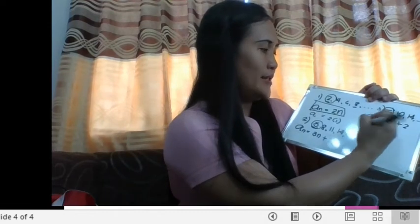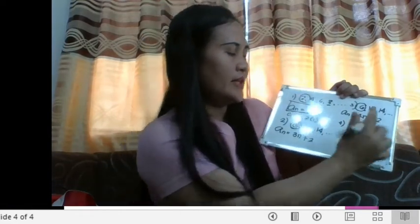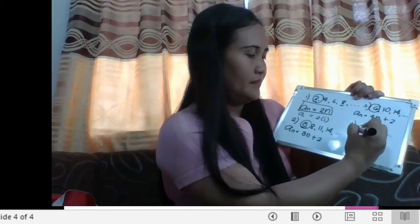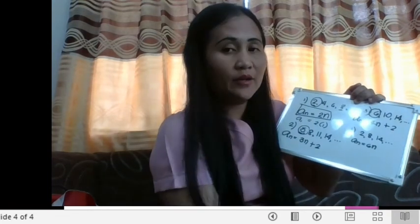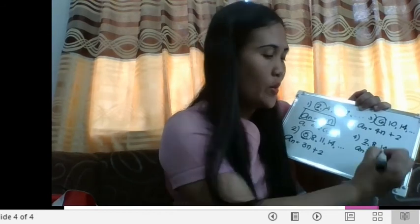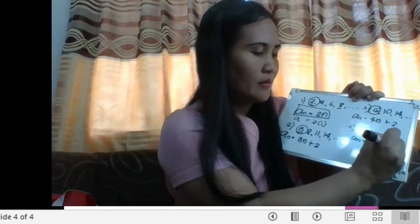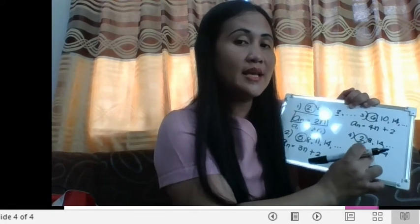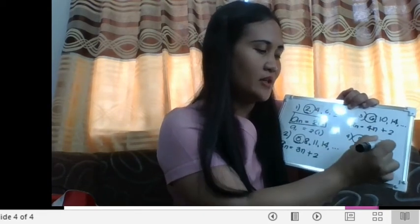For number 4, we have the sequence 2, 8, 14. The number being added is 6, so 2 plus 6 is 8, plus 6 is 14, and so on. So a sub n starts as 6n. But 6 times 1 is 6, and our first term is only 2, so we subtract 4. Our equation is a sub n equals 6n minus 4. Checking: 6 times 1 is 6, minus 4 is 2 — that is our first term. For the third term: 6 times 3 is 18, minus 4 is 14, which is correct.